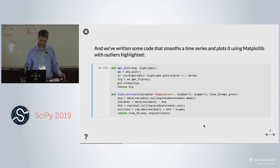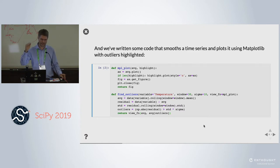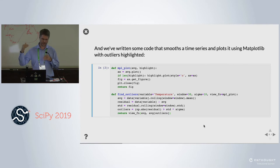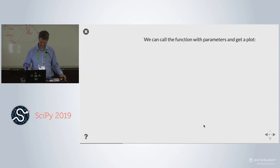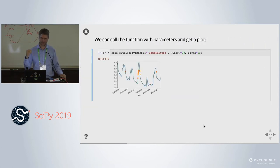Here's some plotting code based on Matplotlib. Basically, it'll take the time series, smooth it, and plot it with Matplotlib while highlighting outliers. It takes a rolling mean, and everything that's a certain number of standard deviations away from the residual between the signal and the rolling mean is considered an outlier. What matters is you can call it and you get a plot.